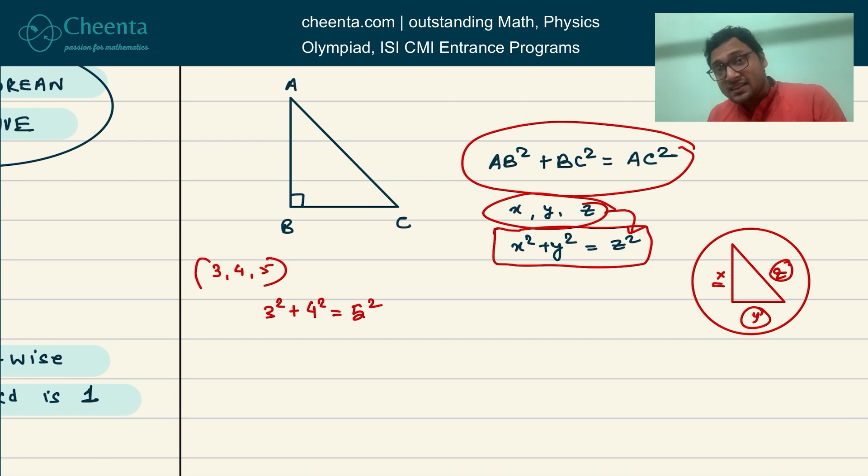In fact, you can create many more Pythagorean triples if you have only one of them. Just multiply each of these numbers with any number, let's say 4. You will get another Pythagorean triple: 12, 16, 20.